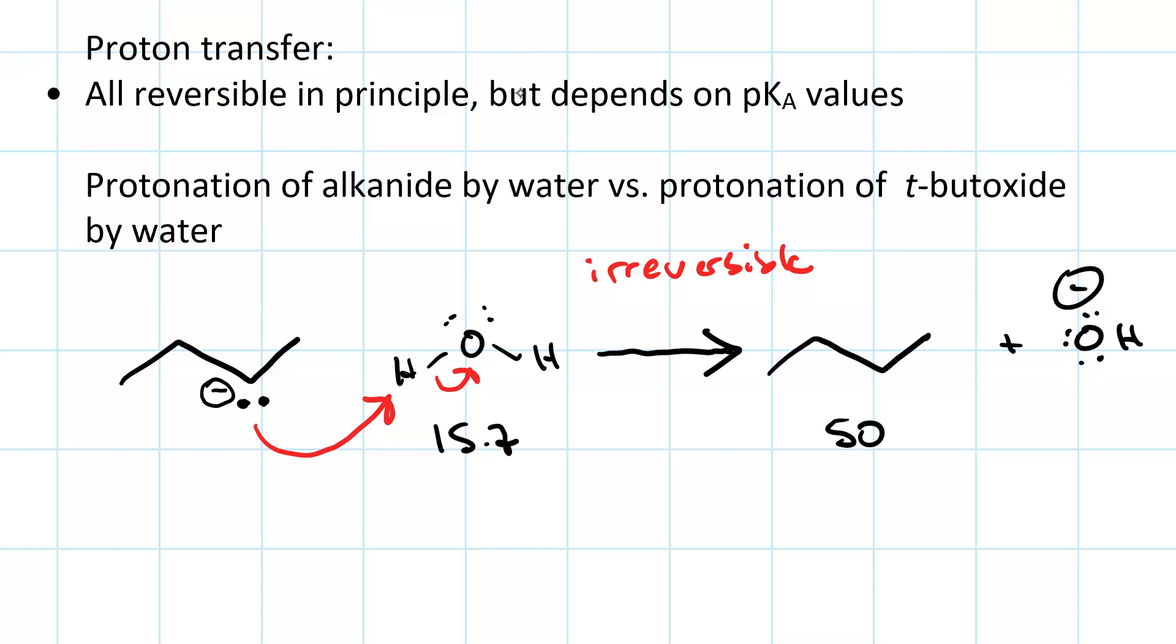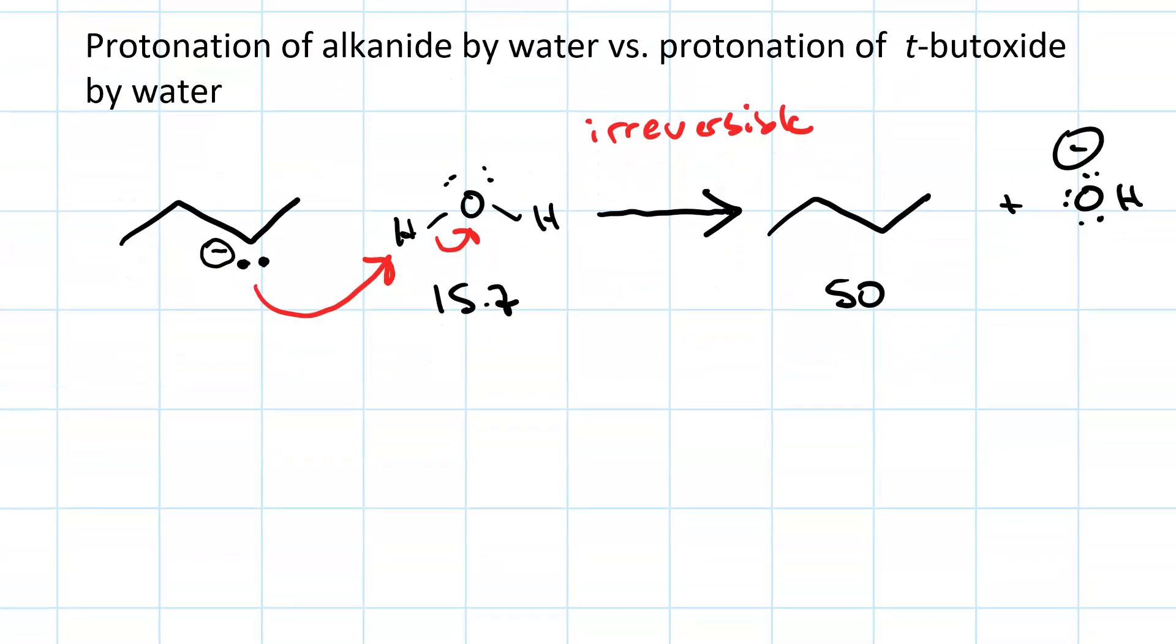Most bases are not as strong as an alkane ion. For instance, T-butoxide is a pretty strong base. We react it with water. We get proton transfer.